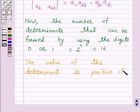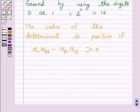The value of the determinant is positive if a11 into a22 minus a21 into a12 is greater than 0, that is a11 a22 is greater than a21 a12.